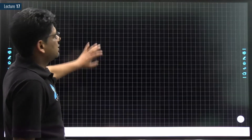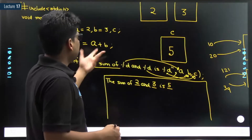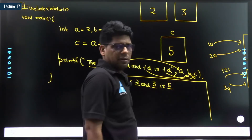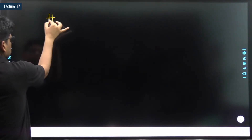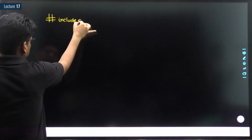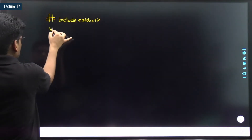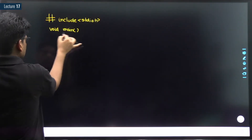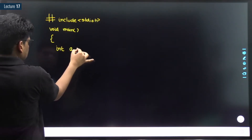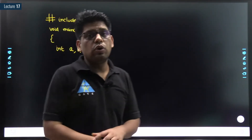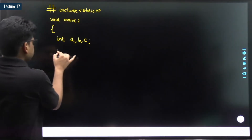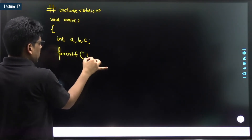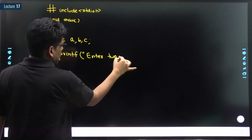So let's see. We need three variables for sure. We need stdio.h, void main, int a, b, c. Why didn't we provide an initial value or hard-code? Because we want the user to provide us two values.